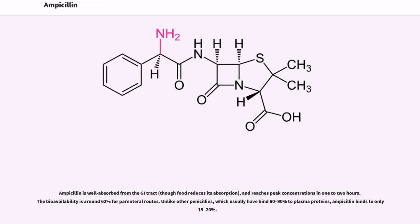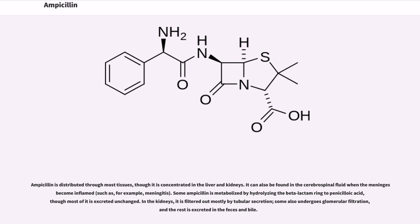Ampicillin is distributed through most tissues, though it is concentrated in the liver and kidneys. It can also be found in the cerebrospinal fluid when the meninges become inflamed, such as, for example, meningitis.